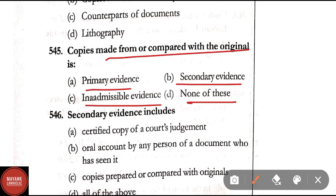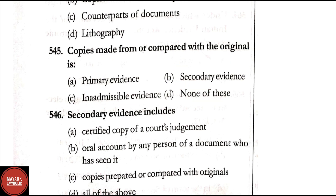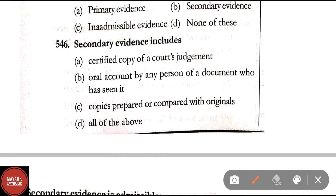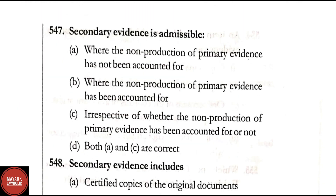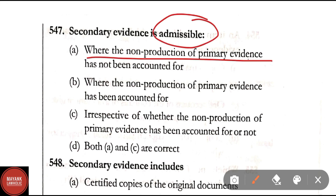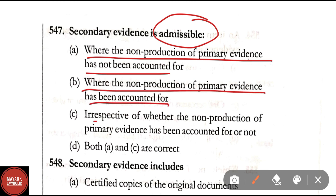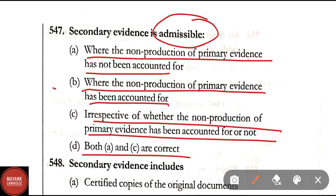Question 545: Copies made from or compared with the original is — primary evidence, secondary evidence, inadmissible evidence, or none of these. Correct answer is Option B — secondary evidence. Question 546: Secondary evidence includes — certified copy of the court's judgment, oral account by any person of a document who has seen it, copies prepared or compared with originals, or all of the above. Correct answer is Option D — all of the above. Question 547: Secondary evidence is admissible when — the correct answer is Option B — where the non-production of primary evidence has been accounted for.